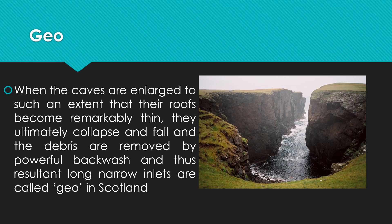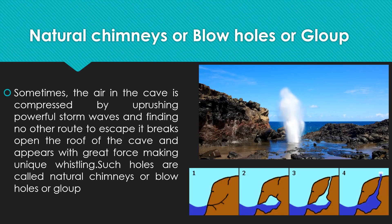Geo is a word derived from Scotland, describing a narrow inlet feature. Sometimes the air in the cave is compressed by approaching powerful waves and, finding no other route to escape, it breaks open the roof of the cave and appears with great force, making a unique whistling sound. Such holes are called natural chimneys, blowholes, or gulfs.